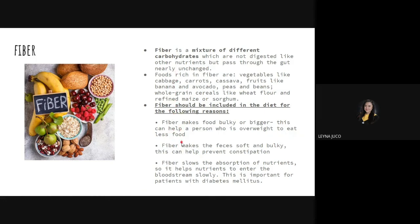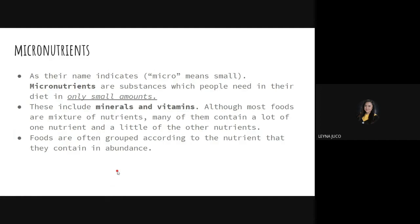These are the reasons why fiber should be included in the diet. Moving to micronutrients — micro meaning small — micronutrients are substances that people need in their diet in only small amounts. This includes minerals and vitamins. Unlike macronutrients where there are many types, for micronutrients the two very important ones are minerals and vitamins. Most foods are a mixture of nutrients, containing both macro and micro amounts.